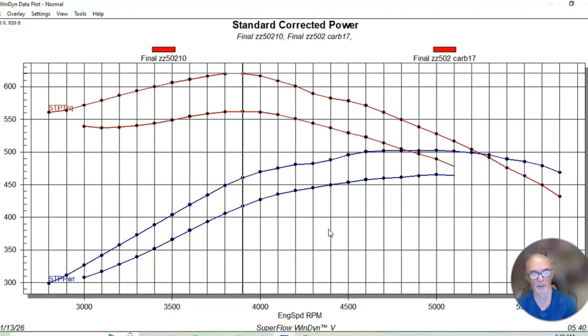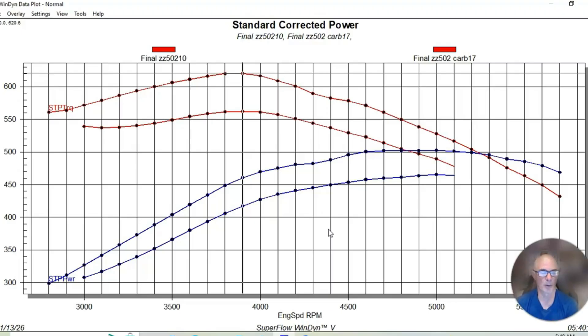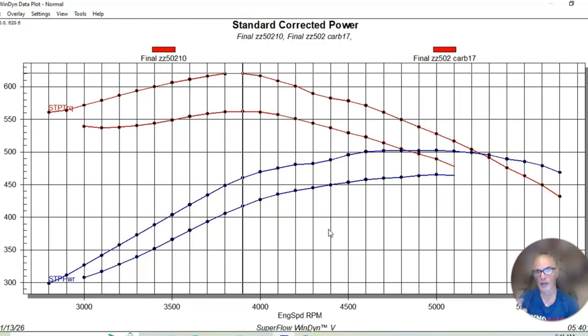We also ran an Edelbrock 850 VRS carburetor on there, so for this power level, 500 horsepower, an 850 VRS carburetor is more than enough. In fact, it'll support multiple hundreds more horsepower with that size carburetor. That's a very, very good carburetor. We dialed in the air fuel - this thing was actually spot on when we pulled it from the cabinet, looking at about 12.5, 12.6 air fuel. Rather than put a distributor in here, which you can do, we continued to use the Holley HP management system to provide the timing curve.